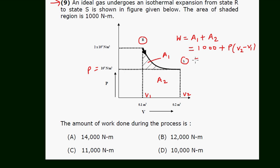So we can write 1000 plus P is 10 to the power 5, and V2 is 0.2 minus V1 is 0.1. Okay.